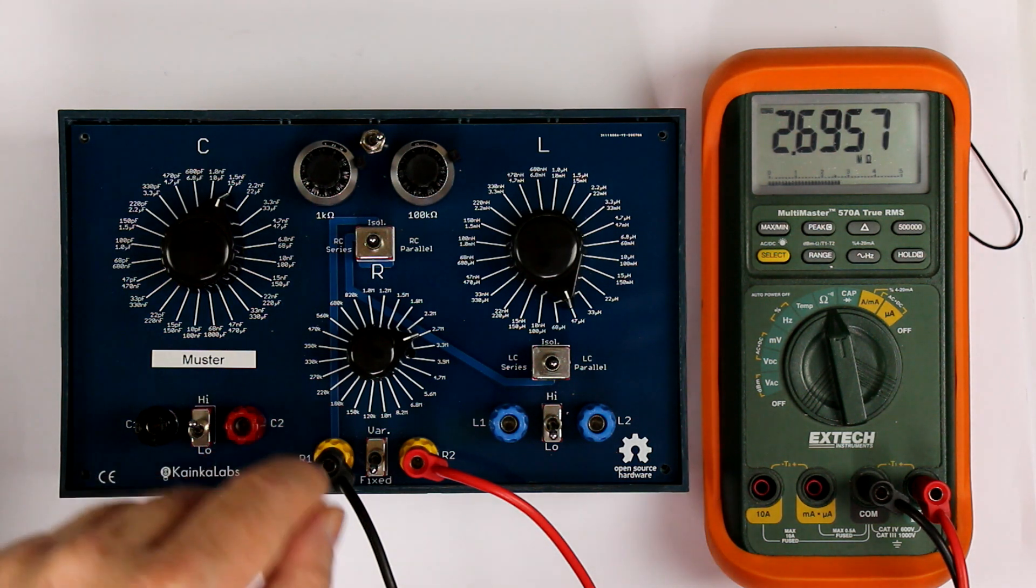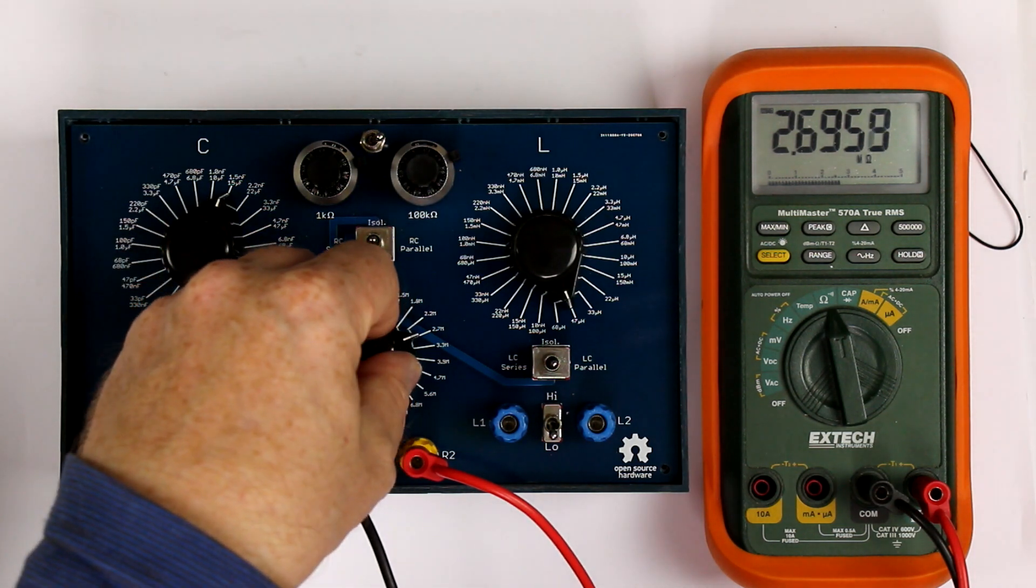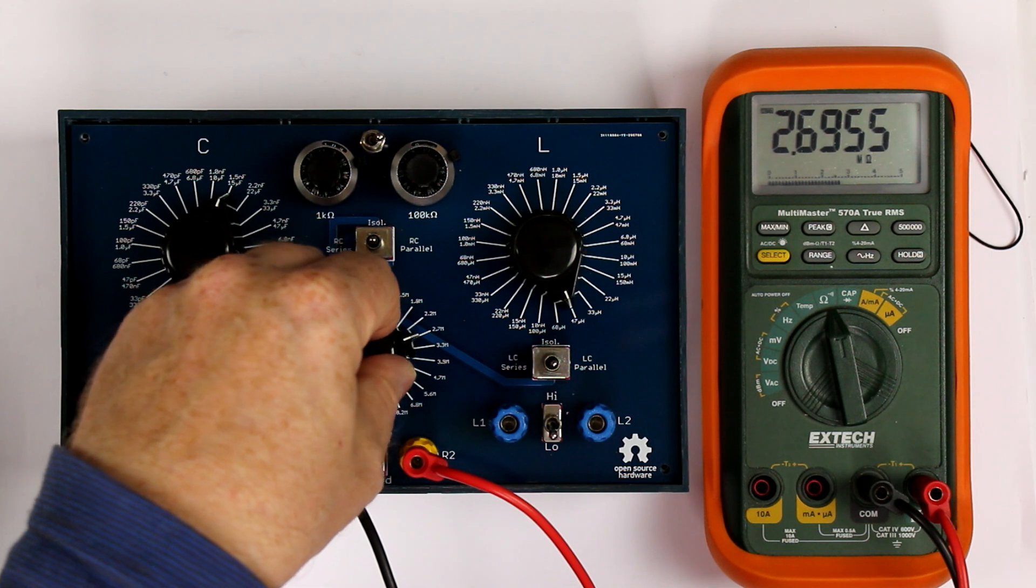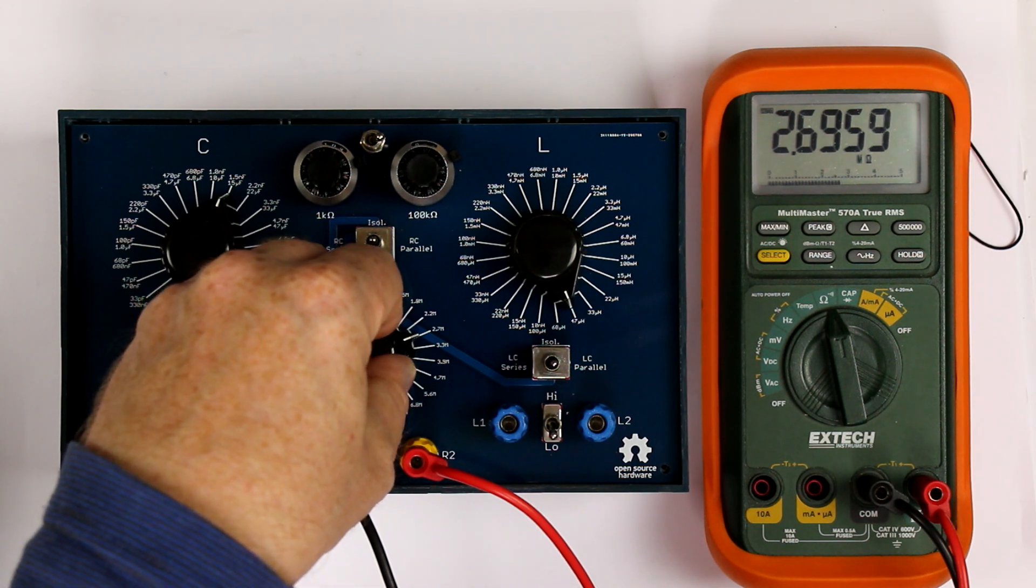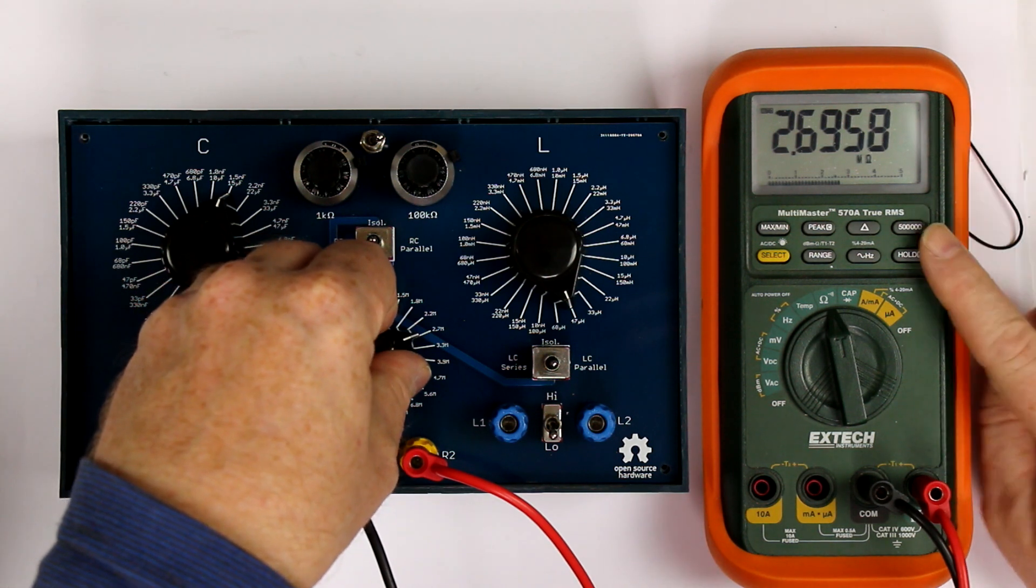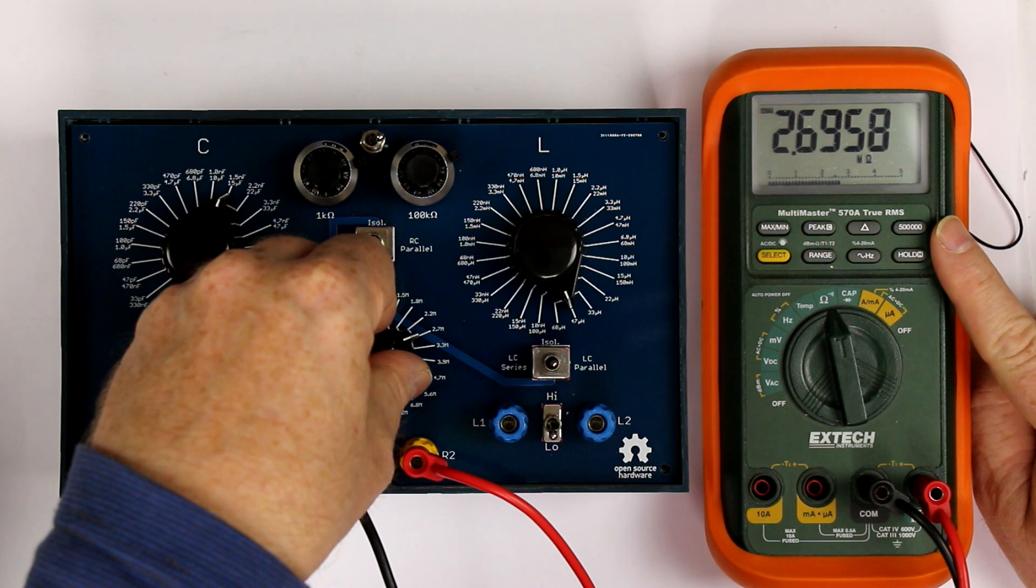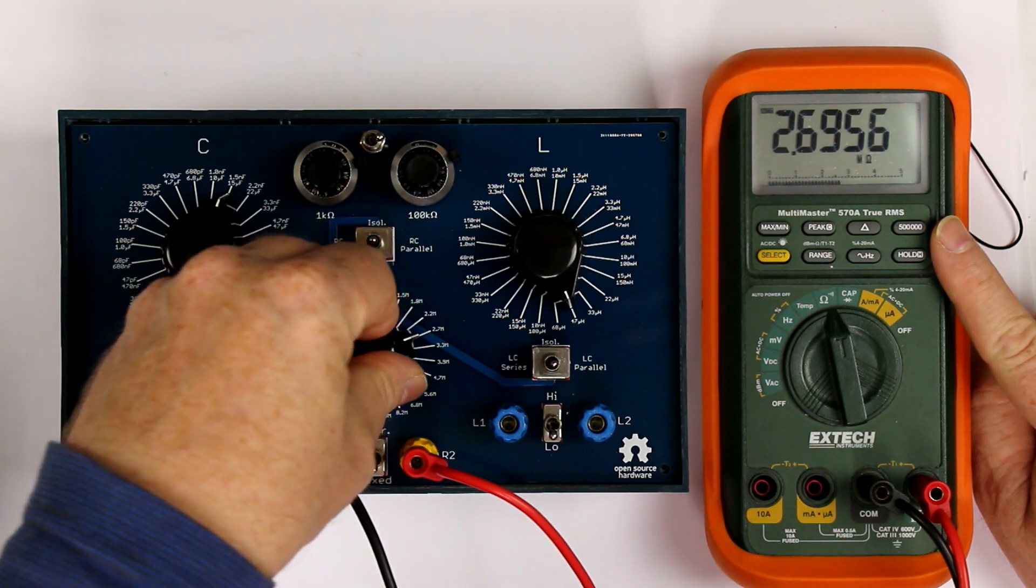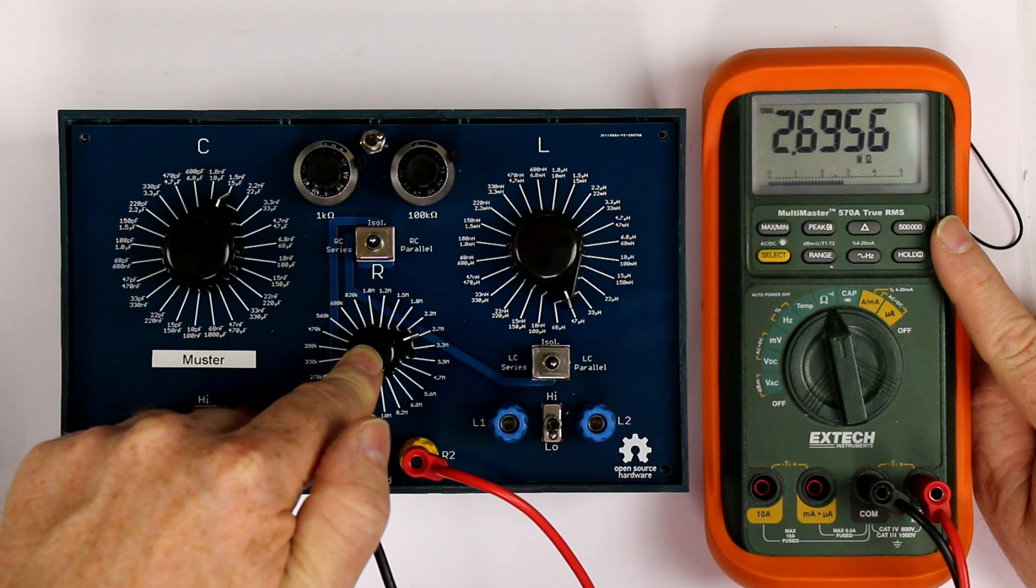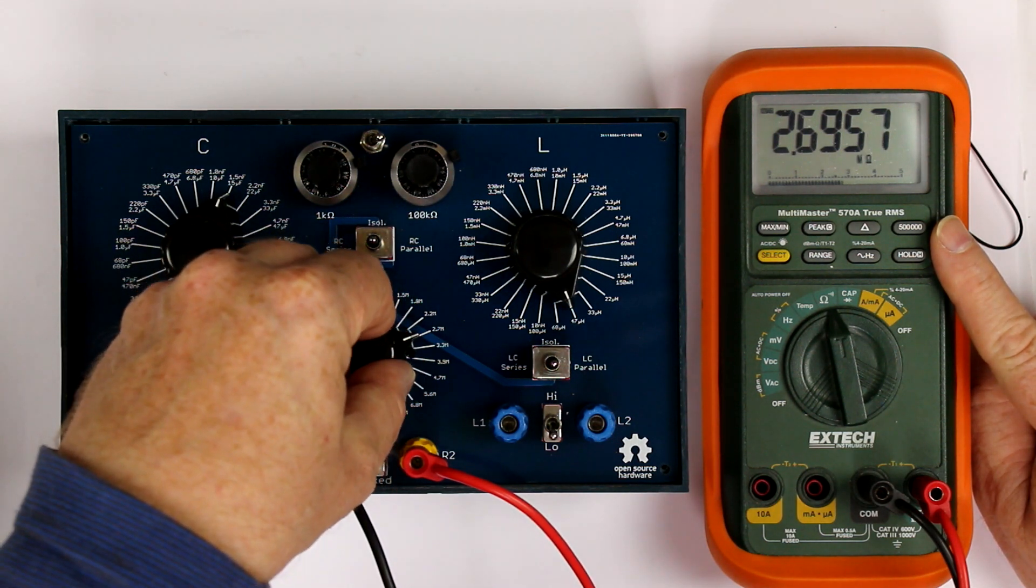And I found this because we check all values of our RLC boxes, and when we go here to the range above one megohm, I first of all connected my trustworthy X-Tech 570A, and the resistors here have 1% accuracy, and you know that they are usually more accurate.